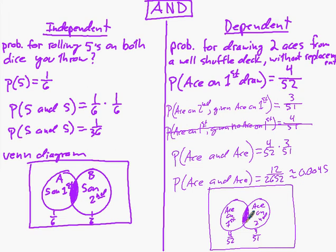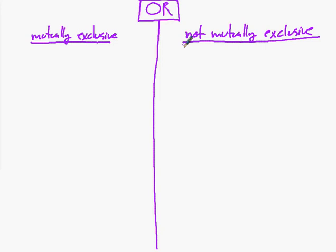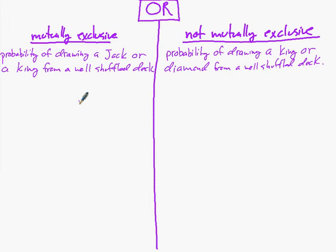Now let's move on to the OR. Its variations are when it's mutually exclusive or not mutually exclusive. The examples would be: mutually exclusive — what's the probability of drawing a jack or a king? You can't draw both; it has to be one or the other. But the probability of drawing a king or a diamond is a little more complicated, as we have to figure out some other probabilities.